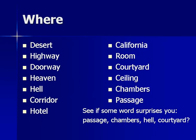We continue to fragment WHERE. We have: desert, highway, doorway, heaven, hell, corridor, hotel, California, room, courtyard, ceiling, chambers, passage. See if you can shape up some kind of pattern, or if you see something that surprises you or looks a bit odd. The passage could be interesting. The chambers, hell, courtyard — maybe you can get some ideas about what this text is about. But don't close it too early.